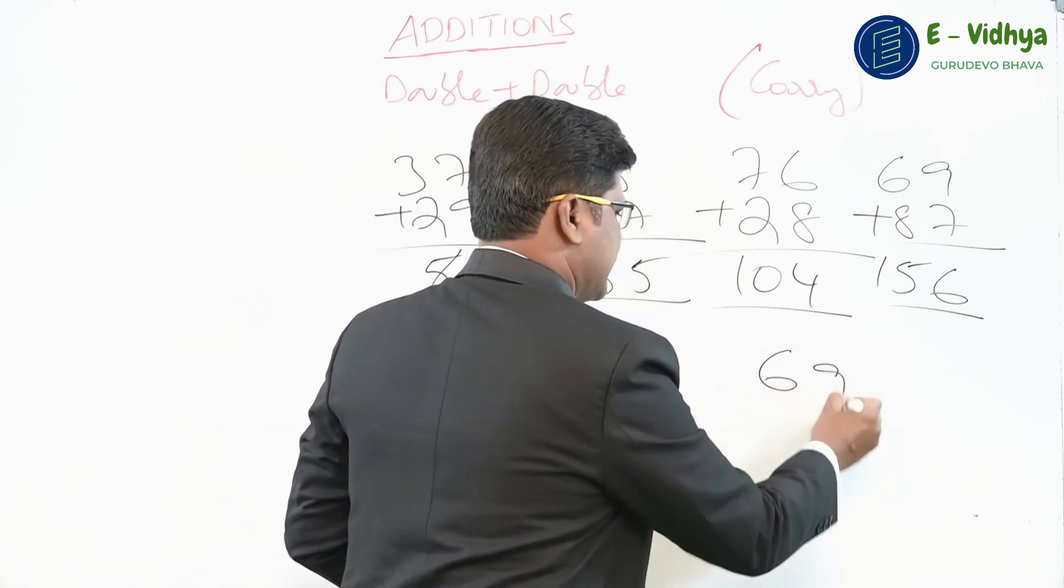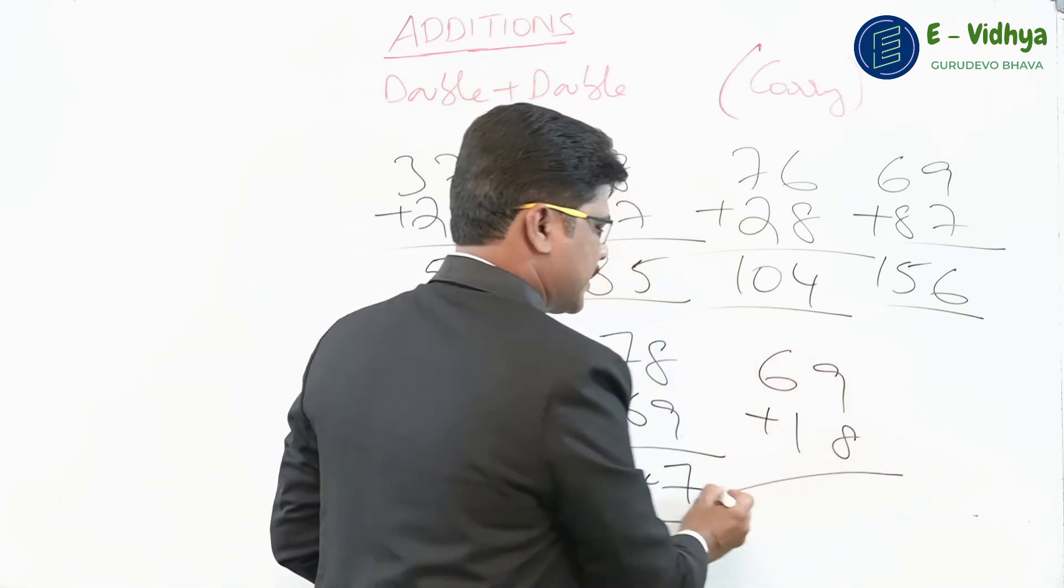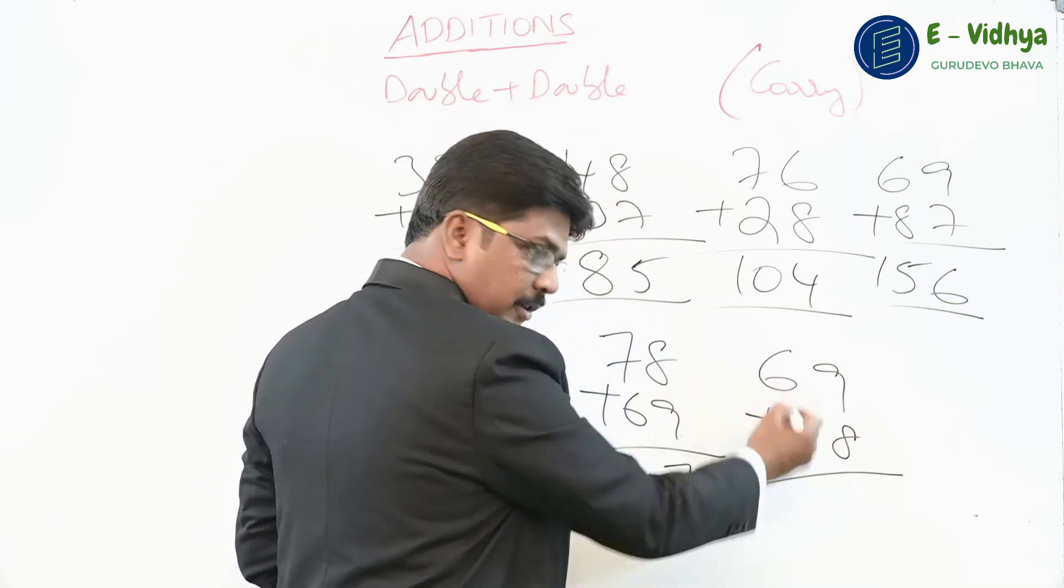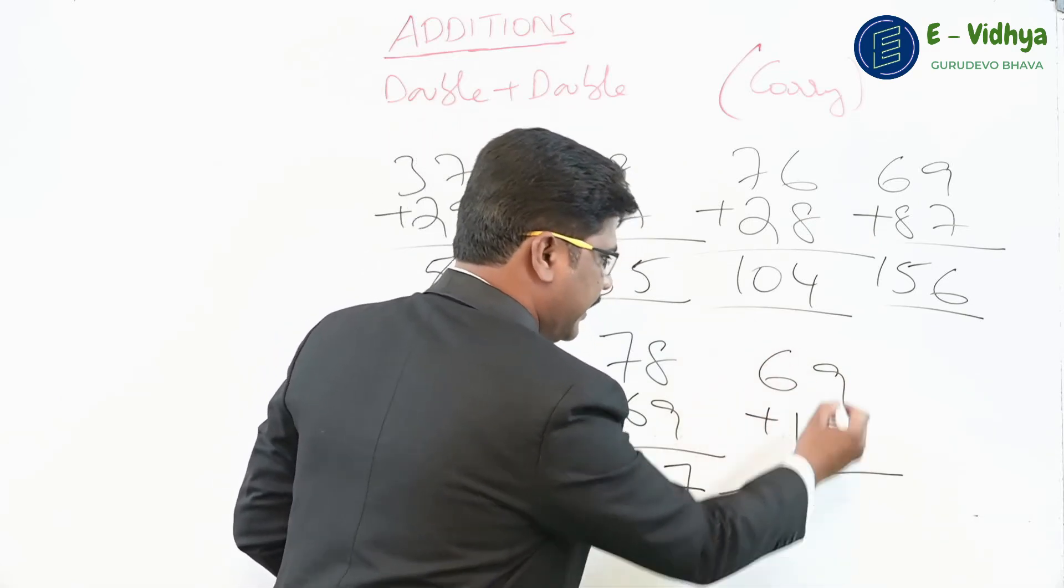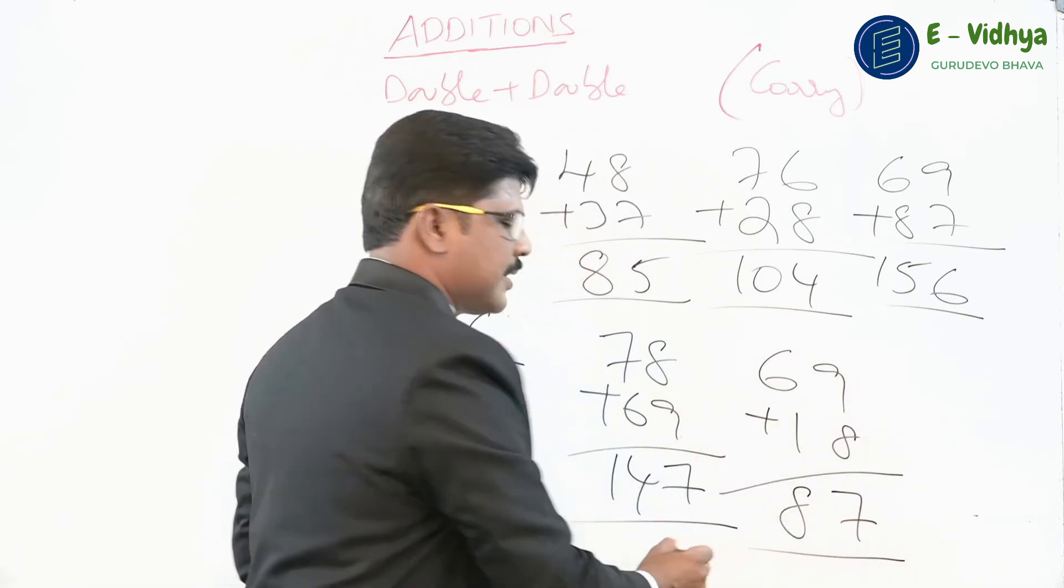Something like 69 plus 18, how much? So look at this: 7. This place, 7, but write 8 there. 8 end number is 7. The answer is 87.